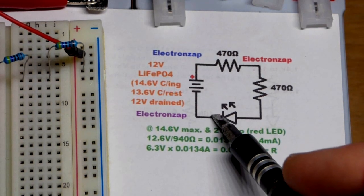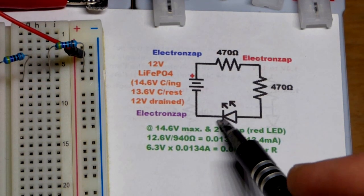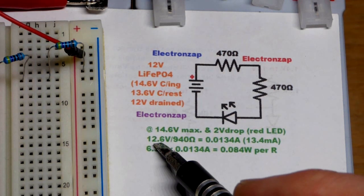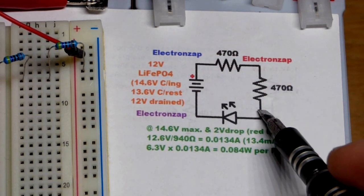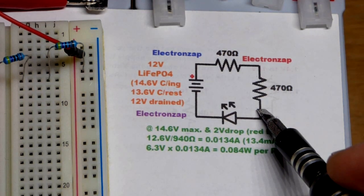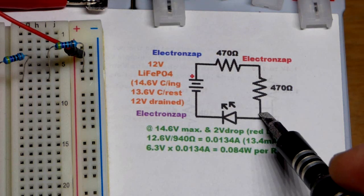The LED though, we're using a red LED, drops about 2 volts. If we used a blue or a green LED, it would drop about 3 volts. So with the red LED we got about 12.6 volts across these two resistors right there. Their resistance adds up though to 940 ohms right there.